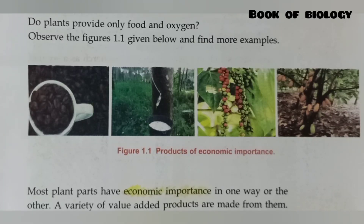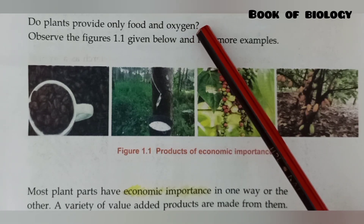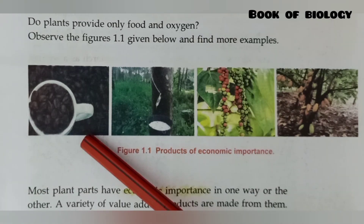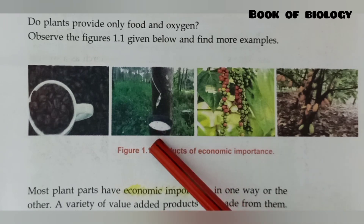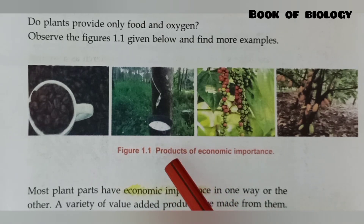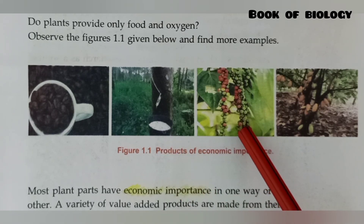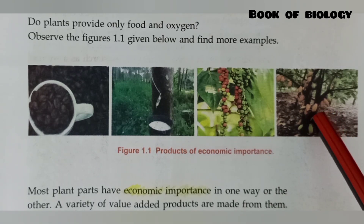Do plants provide only food and oxygen? No — we get many other things from plants. For example, we get coffee beans from plants, we get rubber from plants, and rubber is used for preparing many economically important products. We also get pepper from plants, which has many uses, and we get fruits from plants. Like these, plants are helping us in many ways.